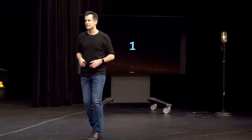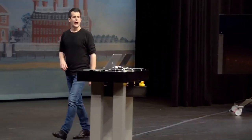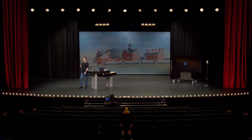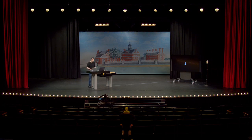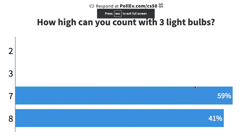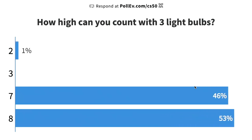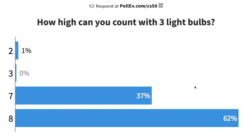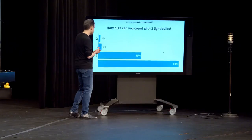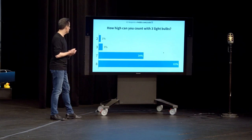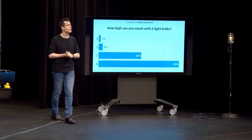We could, of course, use more light bulbs. If we were to use three light bulbs, how high could we count? With one light bulb we can count from 0 to 1 — two possibilities. With three light bulbs, how high could we count? A question is now on your screen — how high can you count with three light bulbs? The results are coming in: about 60% think the answer is 8, many think 7, and some think 3 or 2.